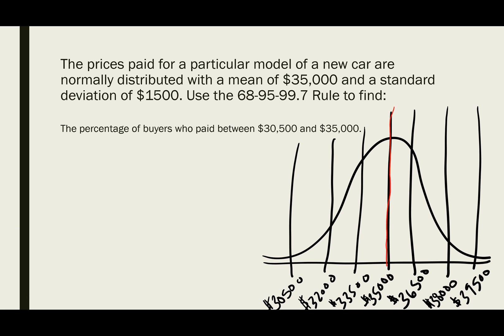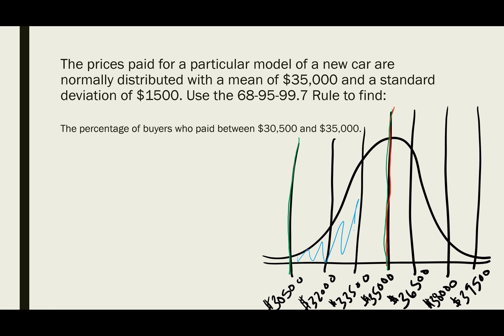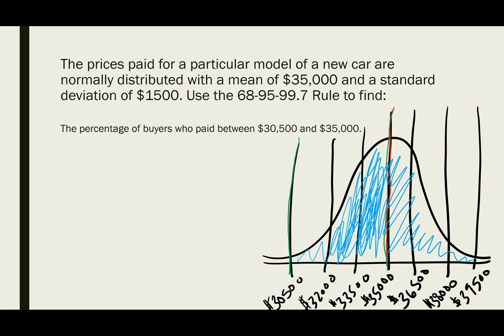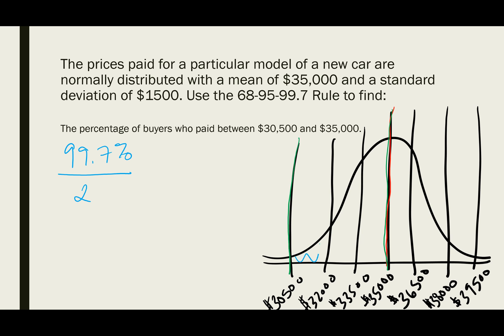In this example, we're looking at buyers between $30,500 and $35,000 — that is, between $30,500 and the mean. Since $30,500 is three standard deviations below the mean, we're not symmetric. We know that plus or minus three standard deviations gives 99.7%, but we only want the part below the mean. Using symmetry, we divide 99.7% by two, which gives us 49.85%. So 49.85% of buyers paid between $30,500 and $35,000.